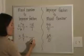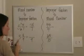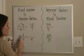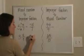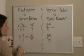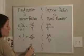Here I'm going to keep my denominator of nine. Nine times three is twenty-seven, plus eight is thirty-five. Three and eight-ninths is equal to thirty-five ninths.